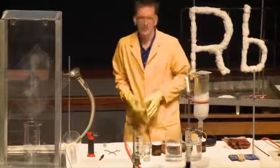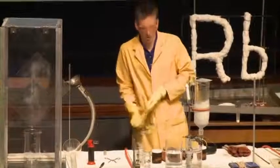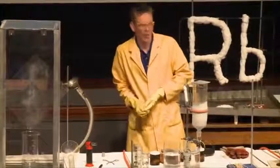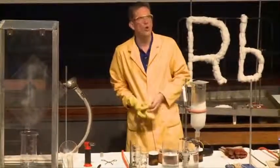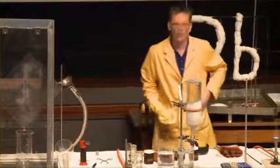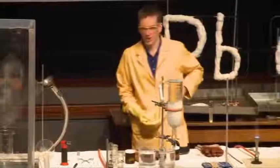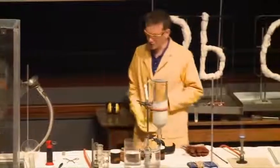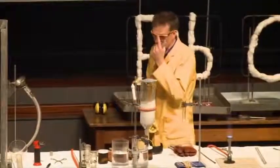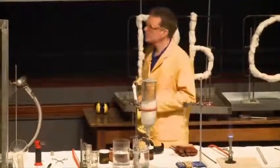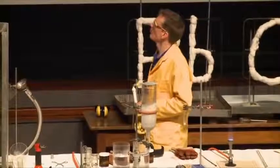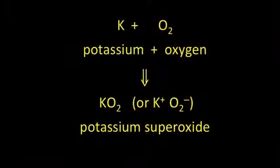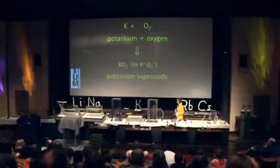We can also get the potassium oxide, the same as before, K₂O. We can also get the peroxide with a bit more oxygen. But with excess oxygen, we can get another compound, and this compound is called potassium superoxide — so it's got even more oxygen in it.